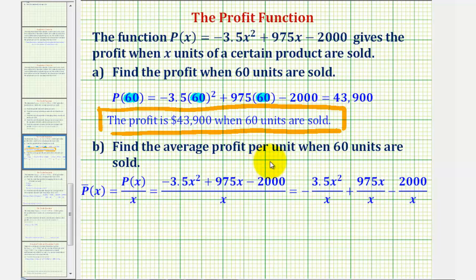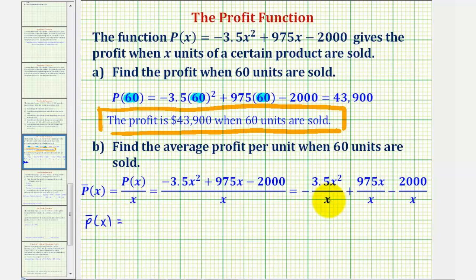For part B, we're asked to find the average profit per unit when 60 units are sold. The average profit equals the total profit divided by the total number of units sold, or p of x divided by x. We could take $43,900 and divide by 60, but let's also find the average profit function. If we take p of x and divide by x, dividing each term by x and simplifying, the average profit function equals negative 3.5x plus 975 minus 2,000 divided by x.